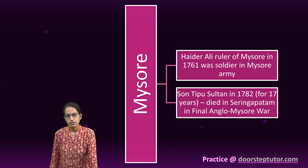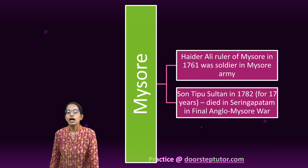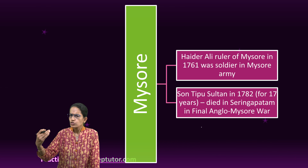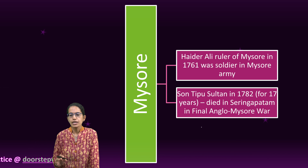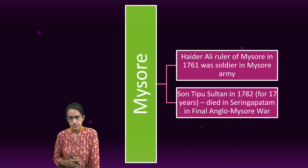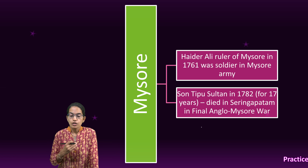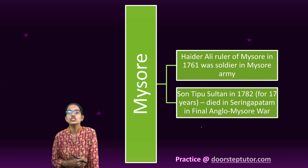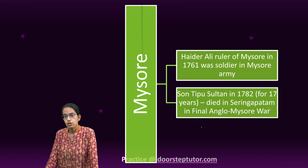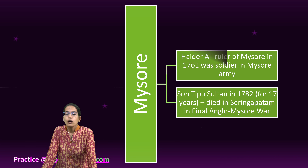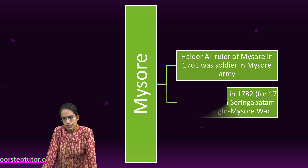The next is the region of Mysore. Mysore was under the rule of Hyder Ali. Hyder Ali was a soldier from the Mysore army who established himself as ruler in 1761. His son Tipu Sultan was the main ruler and ruled there for nearly 17 years. He died in Srirangapatna in the final Anglo-Mysore war fighting against the British. Tipu Sultan was also known as the Tiger of Mysore.